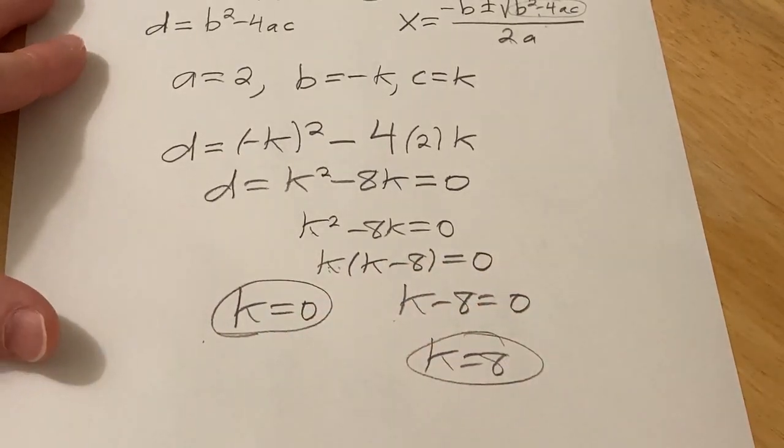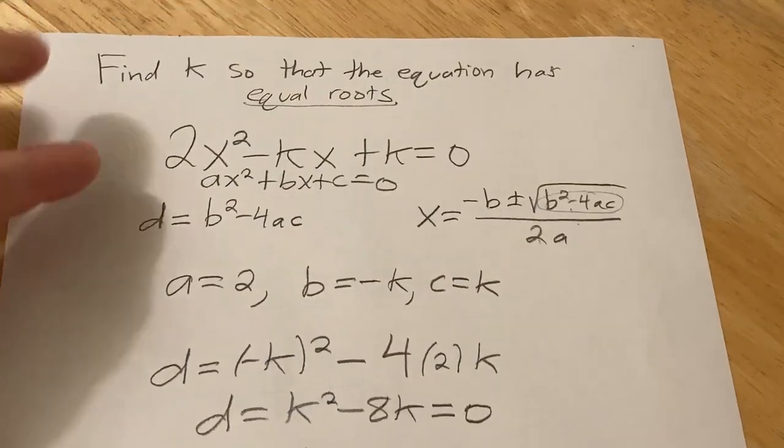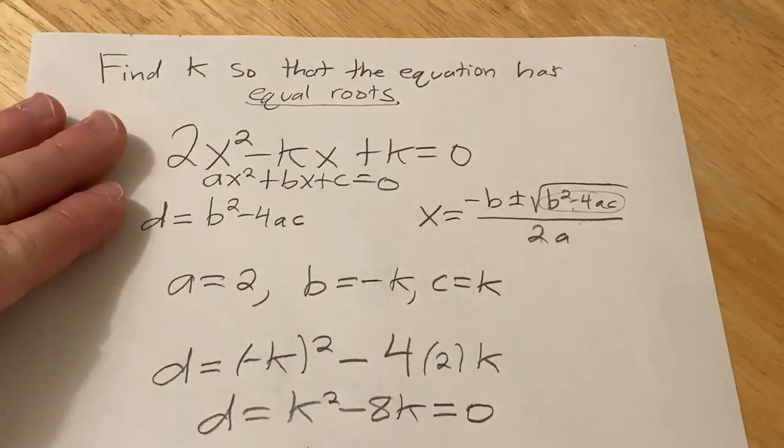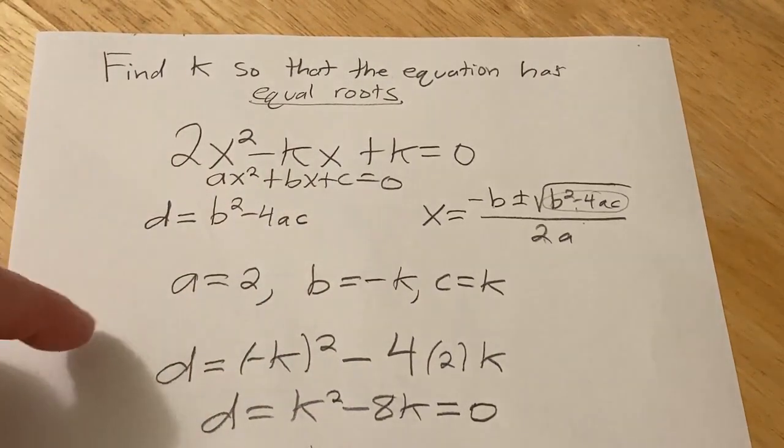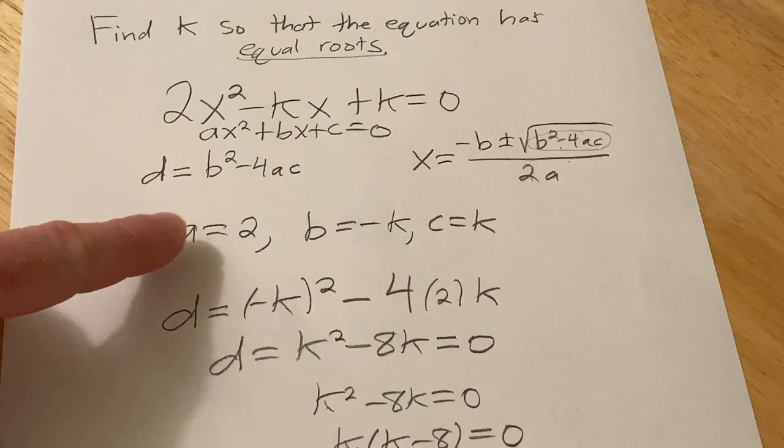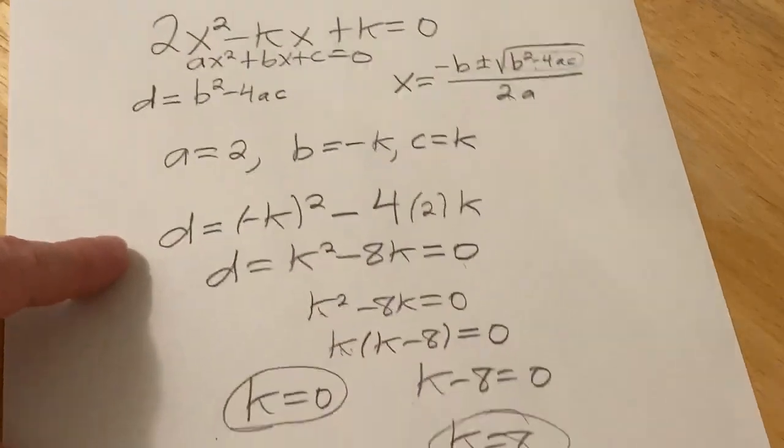Very interesting problem because they give us a quadratic equation, and they're asking us to find the value of k that makes this have a repeated real root or equal root. So you just look at the discriminant, then set it equal to 0, and then solve for k.